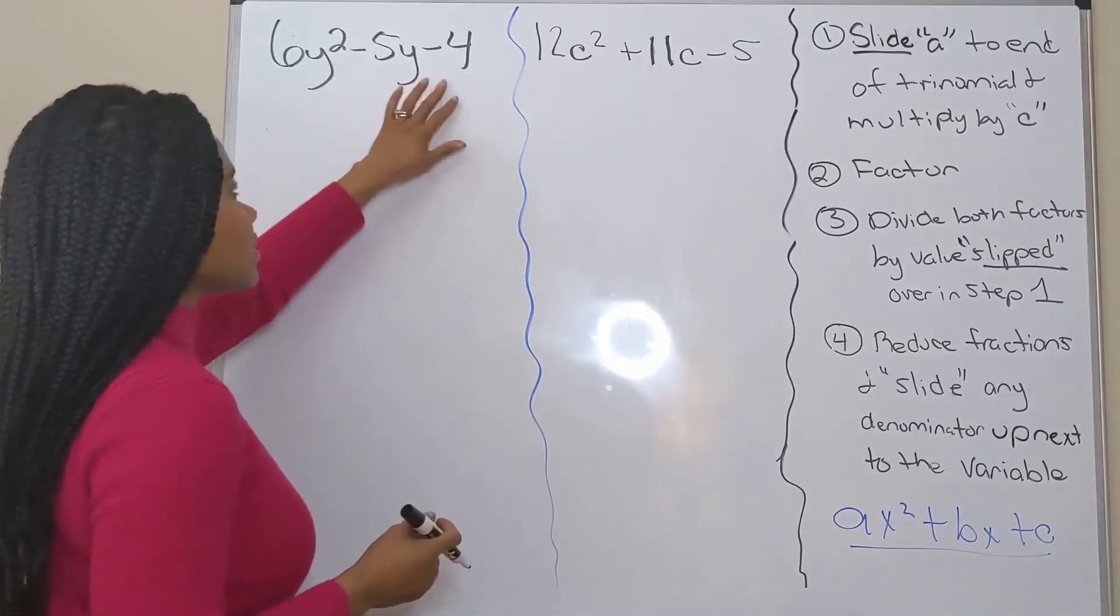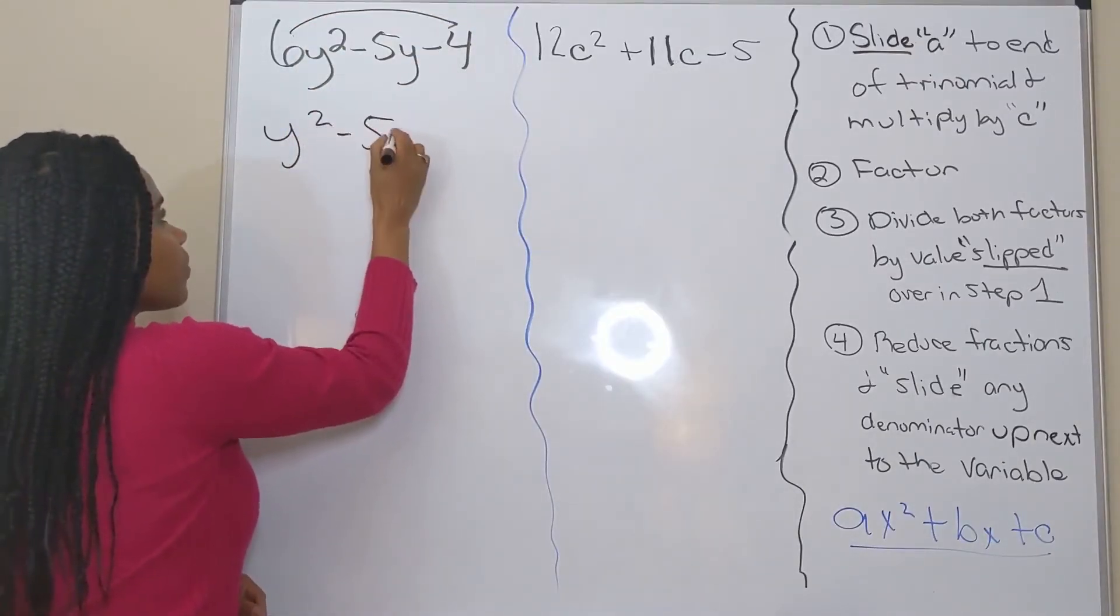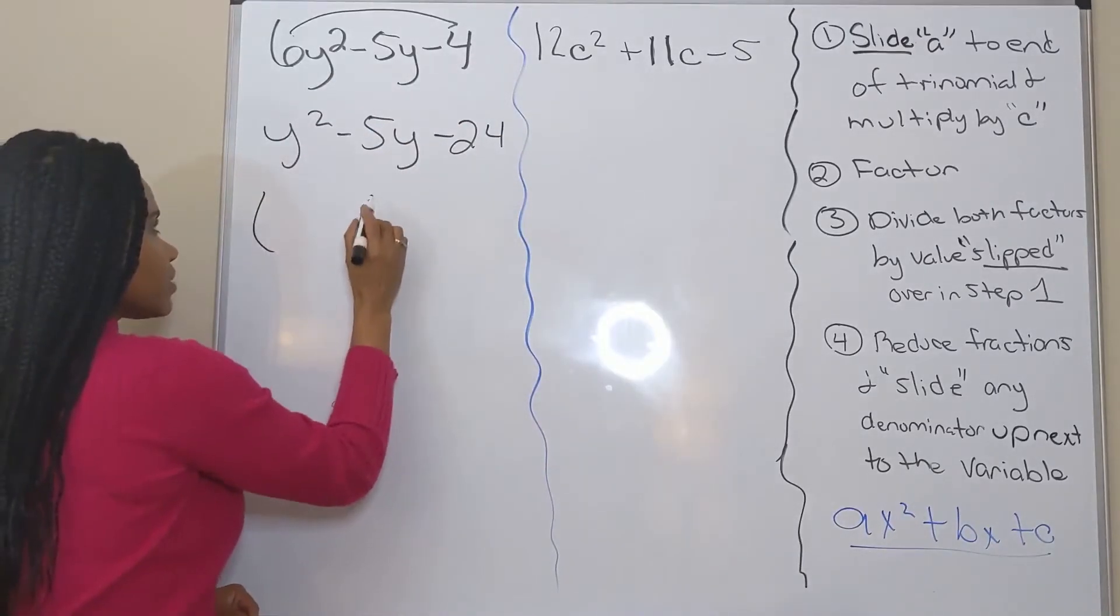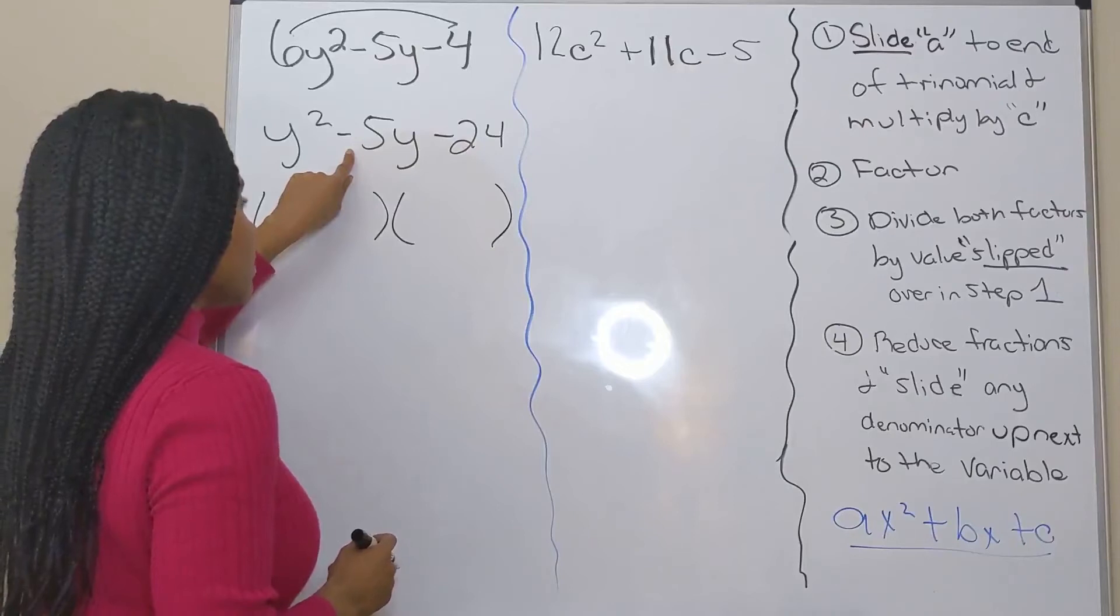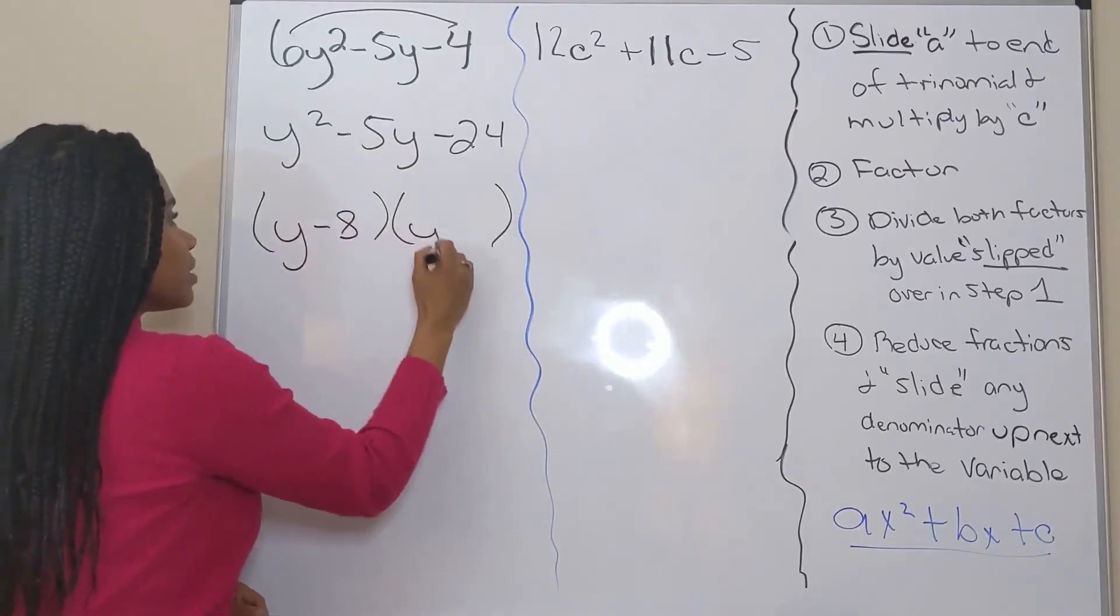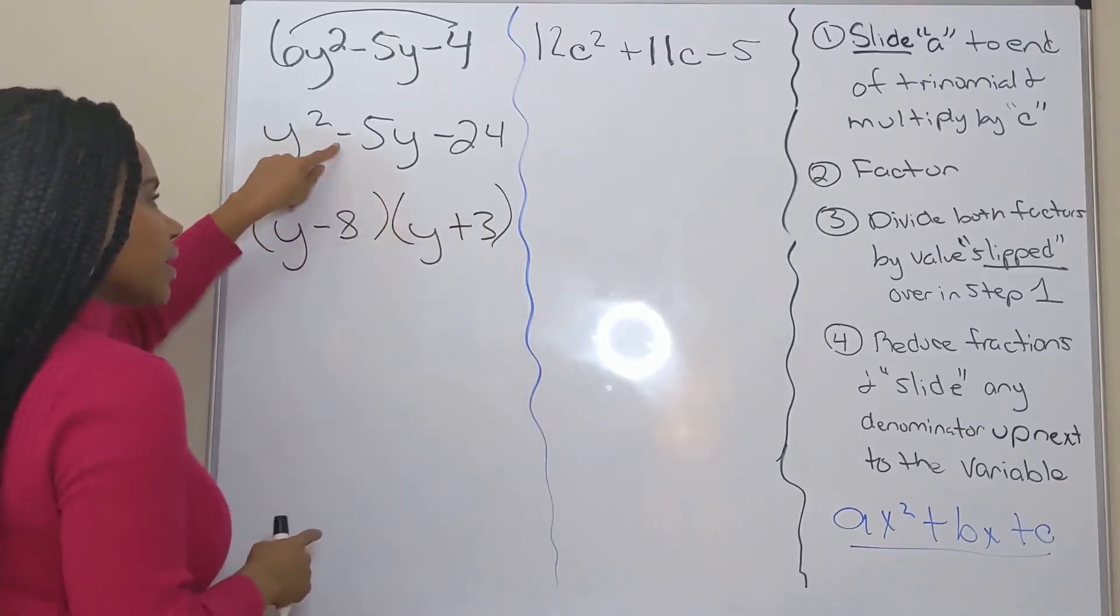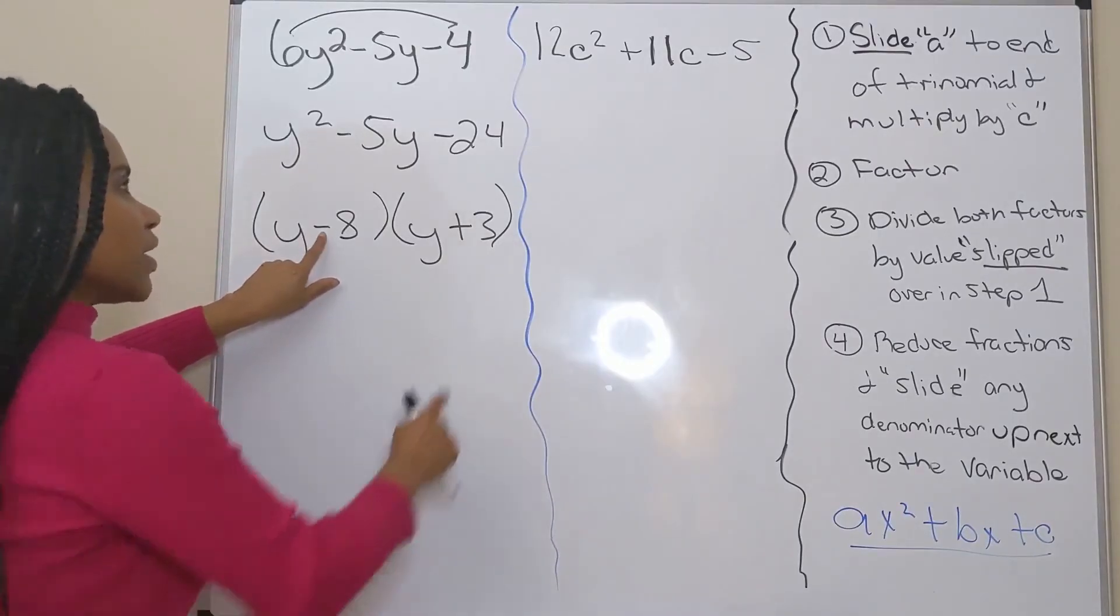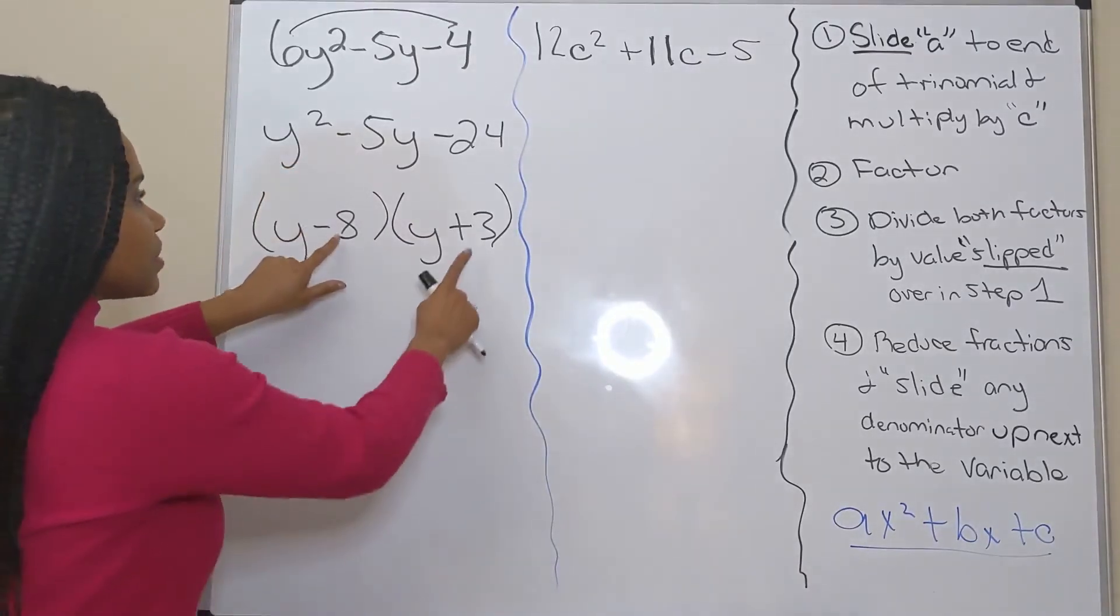All right, same steps. Slide a over to c and multiply. So that would be y squared minus five y minus 24 because six times negative four is negative 24. Factor. So factors of negative 24 that have a sum of negative five are negative eight and positive three. So that's going to be y minus eight and y plus three. Because when I multiply, I get negative 24. But when I add, I get negative five. Make sure you check your signs as you're factoring because if you were to put a positive eight here and a negative three, when you add them, you get a positive five. So you have to use the correct sign.